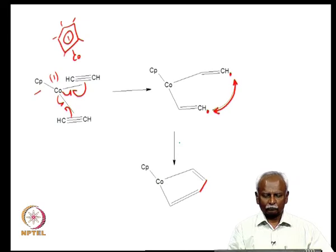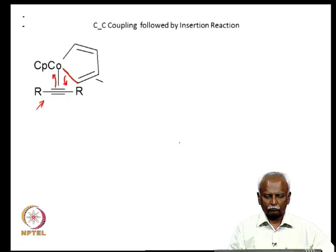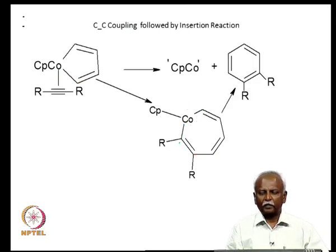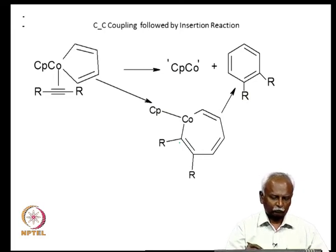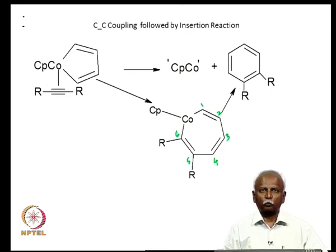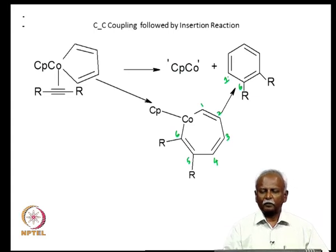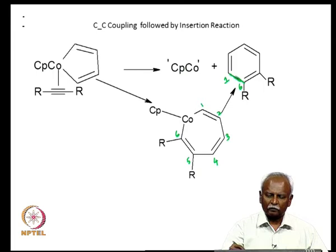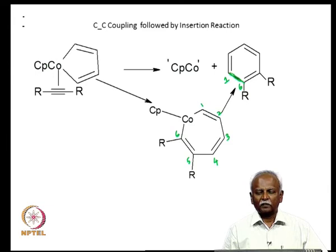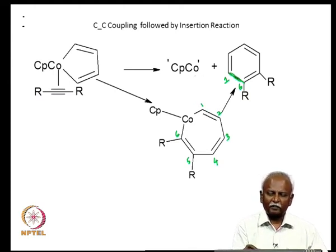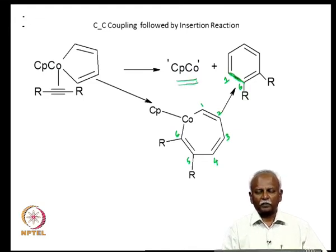In the subsequent step, a carbon-carbon bond is formed between the 6 carbon atoms attached to the cobalt, with atoms 1 and 6 combining together. This results in the formation of a benzene ring. The stability of the aromatic benzene ring drives a very fast reaction to form the 6-membered ring and regeneration of the cobalt(I) species with the cyclopentadienyl group.